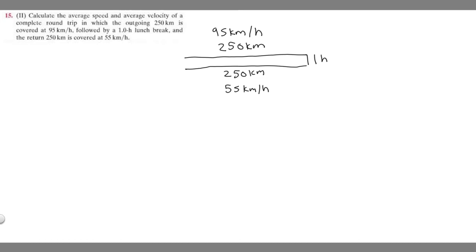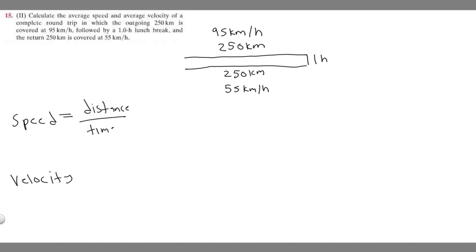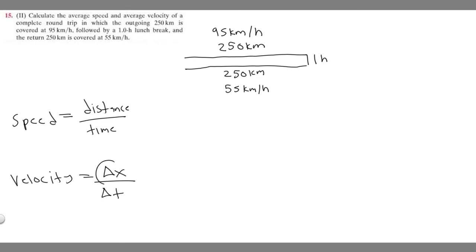Now let's find what they're asking us for. We're trying to find average speed and average velocity. In order to solve this, you need to know the difference between speed and velocity. Speed is distance over time — the total distance traveled divided by the total amount of time. Velocity is the change in position over change in time: delta x over delta t, where delta means change.